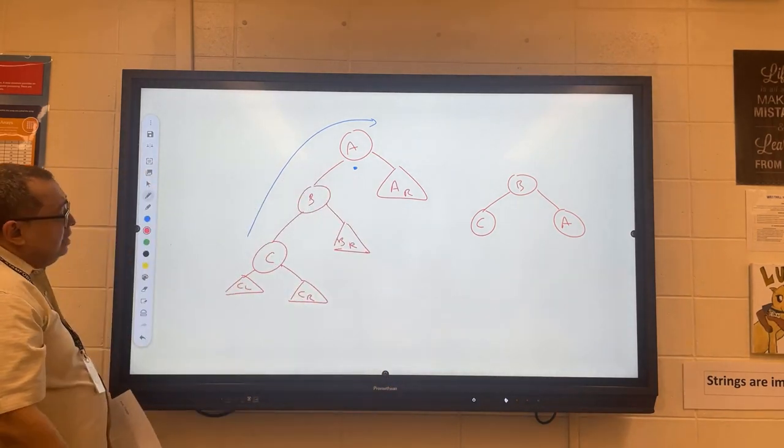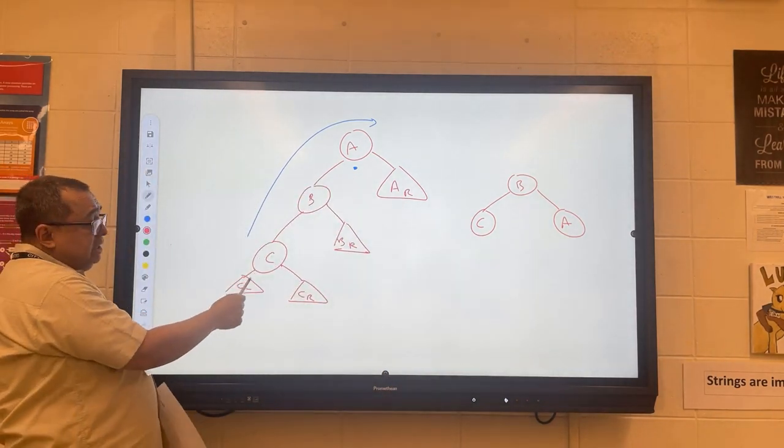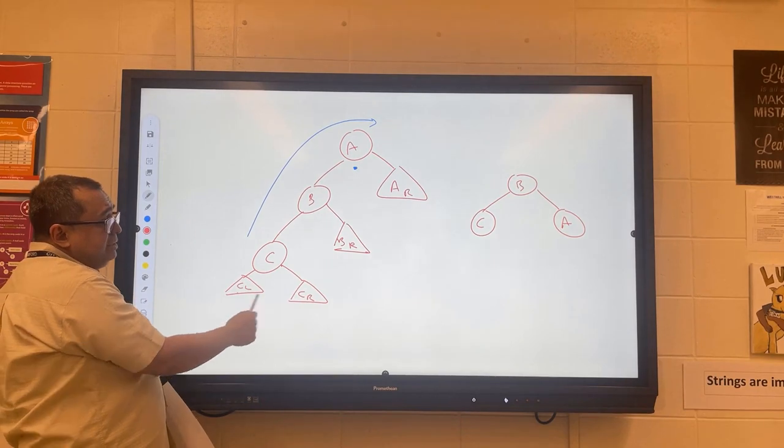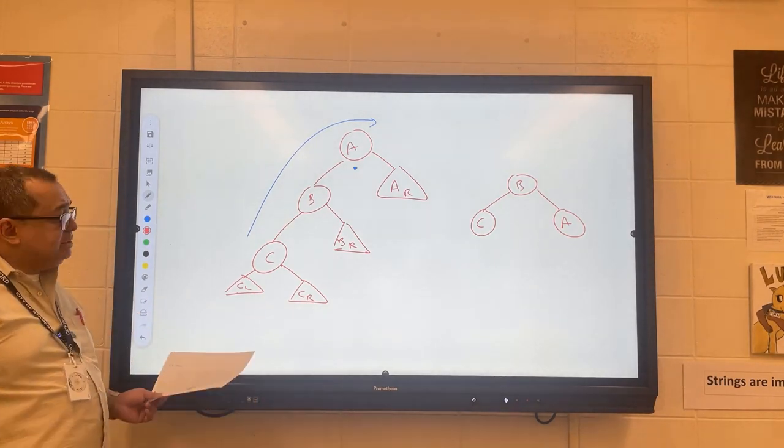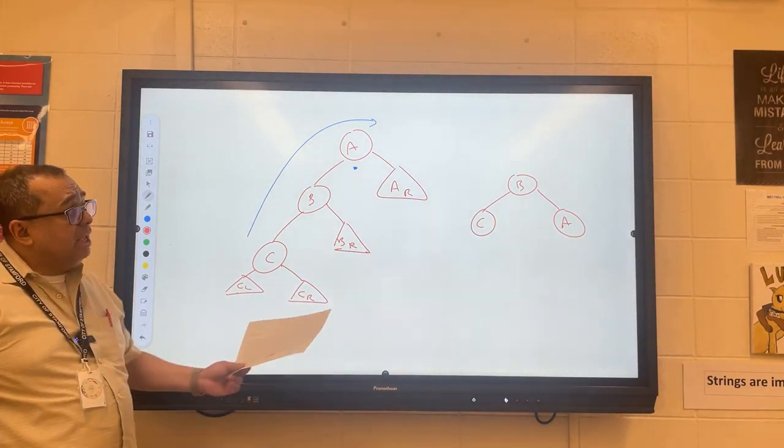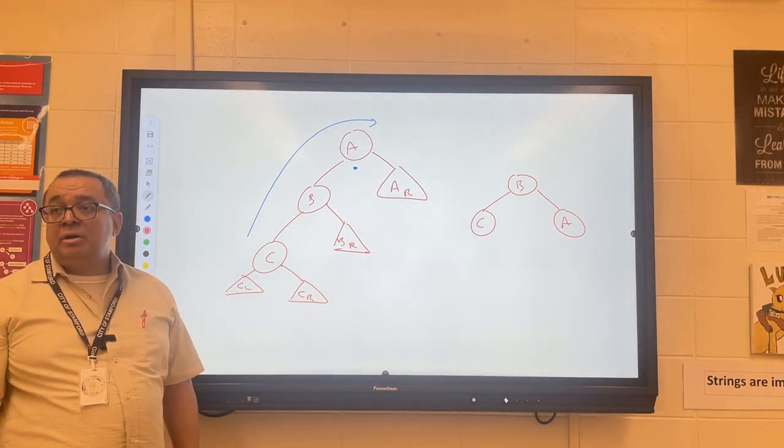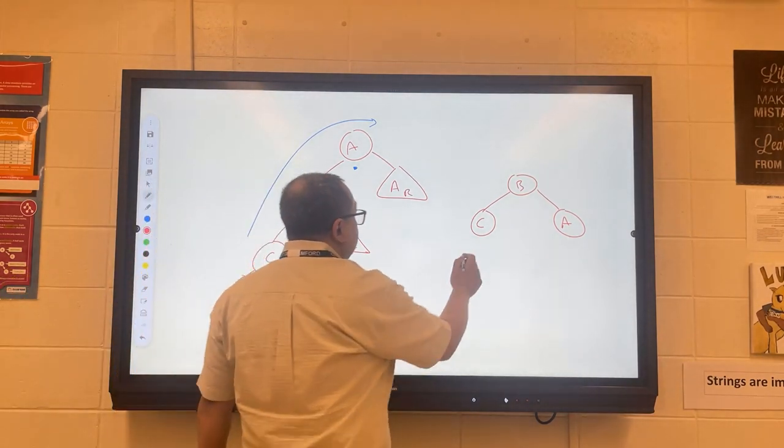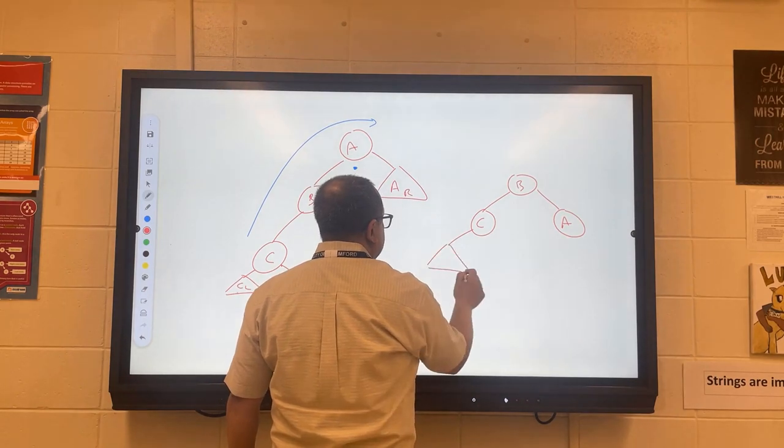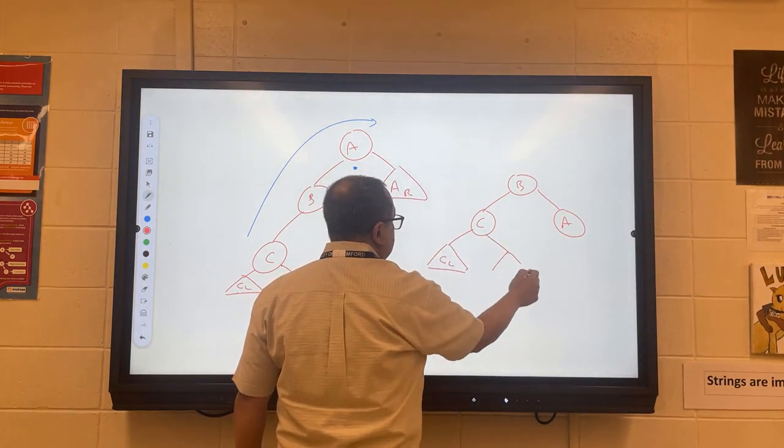For C, you can see that we have this left and right subtree. What do you think happens to the left and right subtree of C after the rotation? Yes, they stay there. So CL and CR are going to be untouched by the rotation.